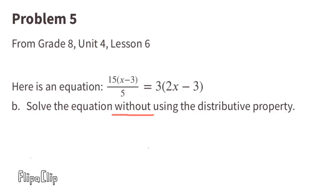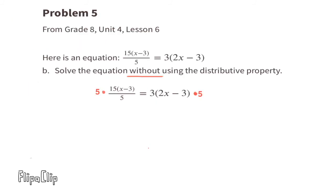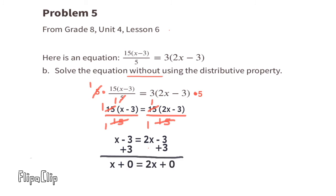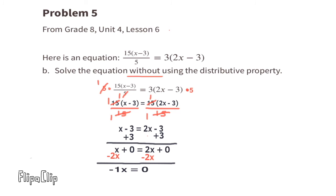Part B: Solve the equation without using the distributive property. Multiply both sides by 5. The equation reads 15 times (x minus 3) equals 15 times (2x minus 3). Divide both sides by 15, giving x minus 3 equals 2x minus 3. Add 3 to both sides: x equals 2x. Subtract 2x from both sides to get negative x equals 0. Divide both sides by negative 1, and x equals 0.